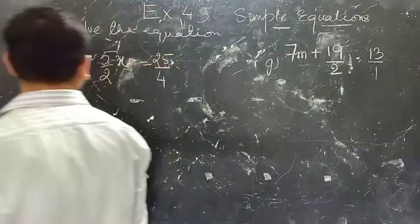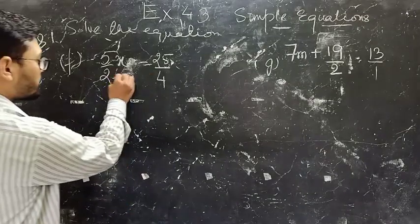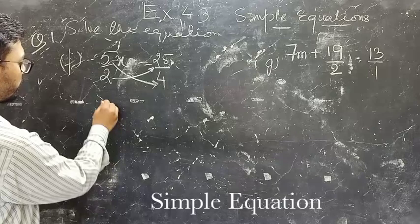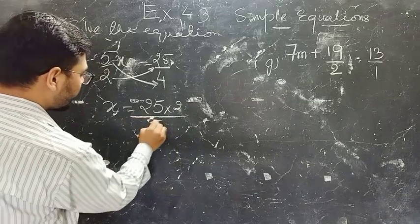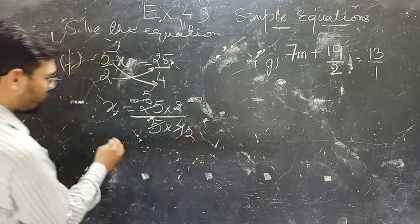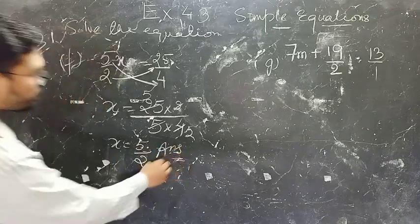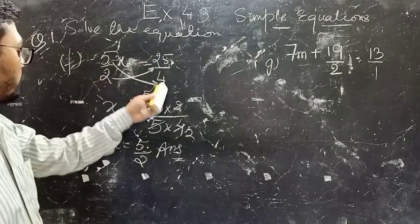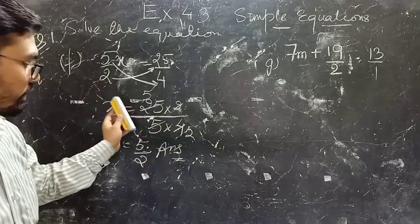Part F: 5 by 2 times x equals 25 by 4. The first step is cross multiplication. X equals 25 into 2 divided by 5 into 4. You have 25 divided by 4 and 2 divided by 4 — simplifying, 2 twos are 4 and the answer is 5 by 2. So the value of x is 5 divided by 2.